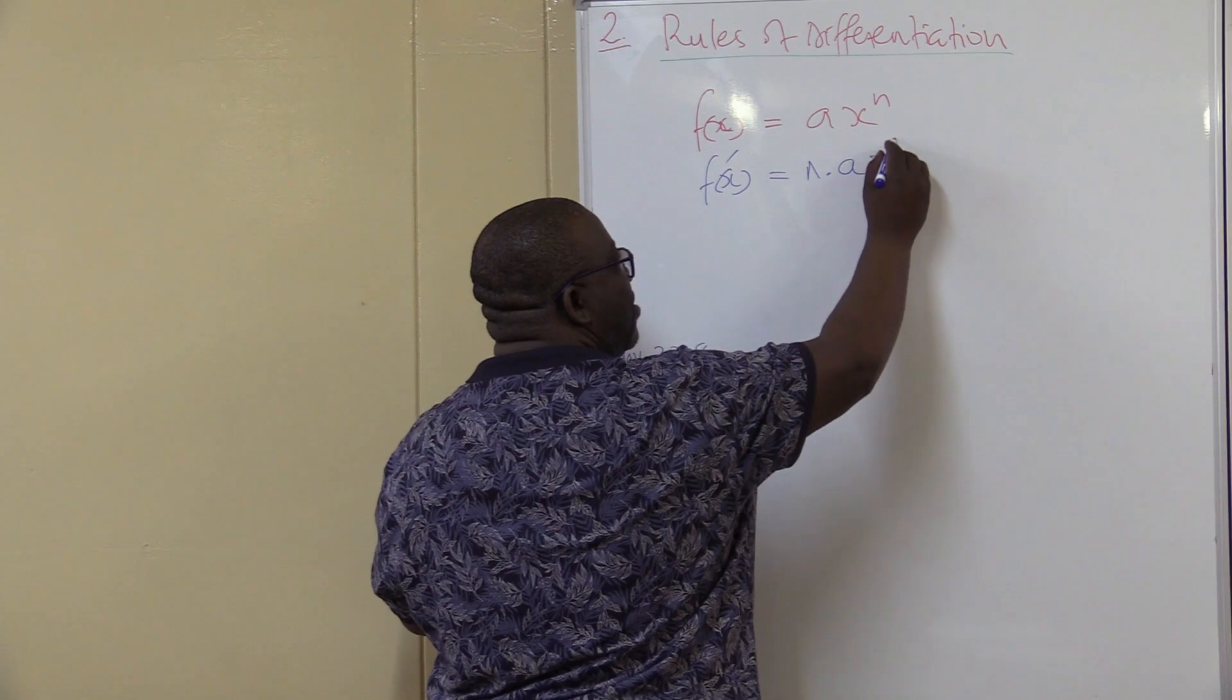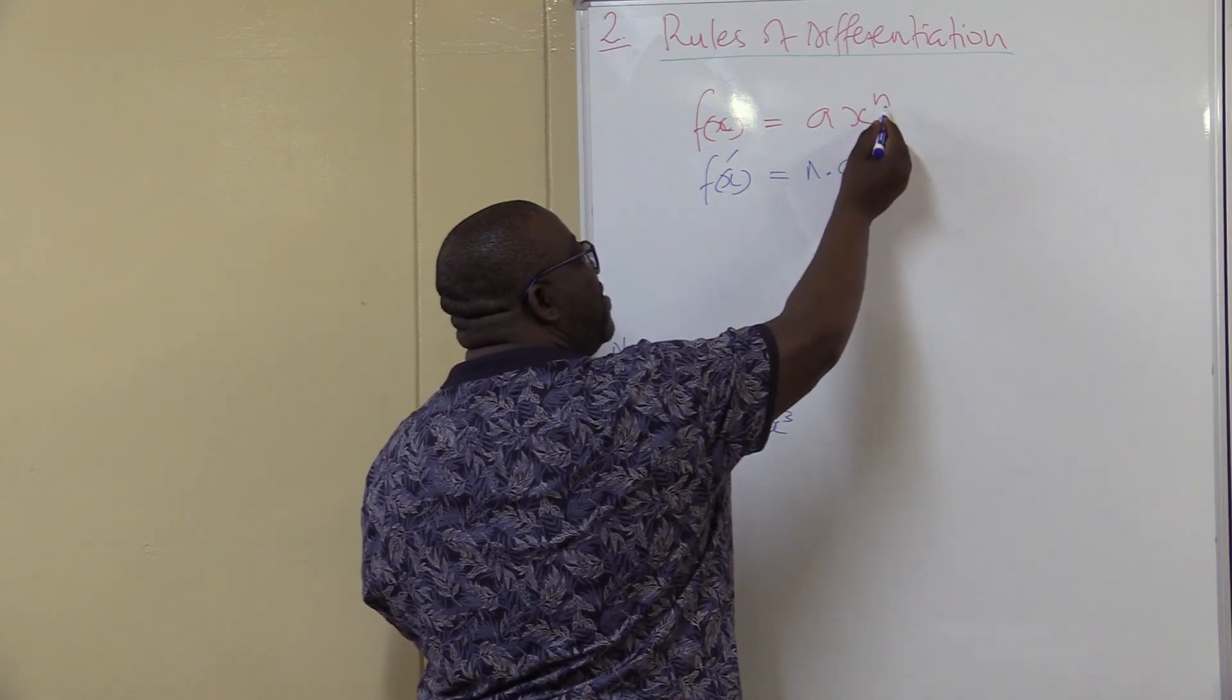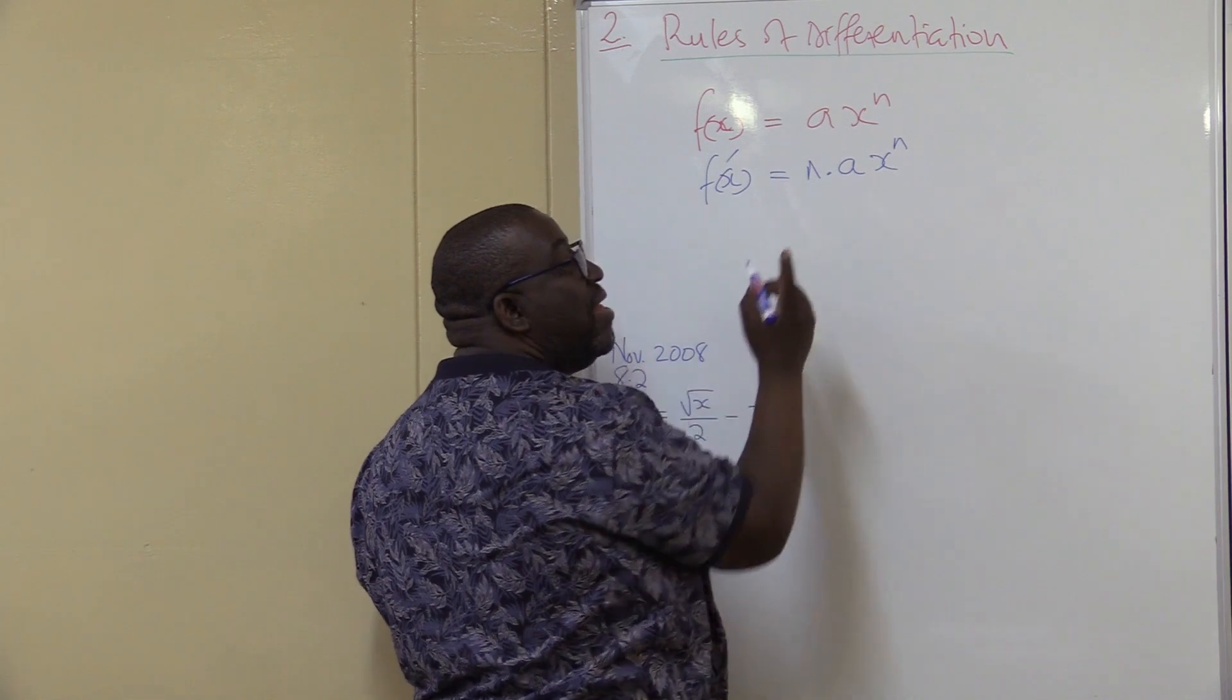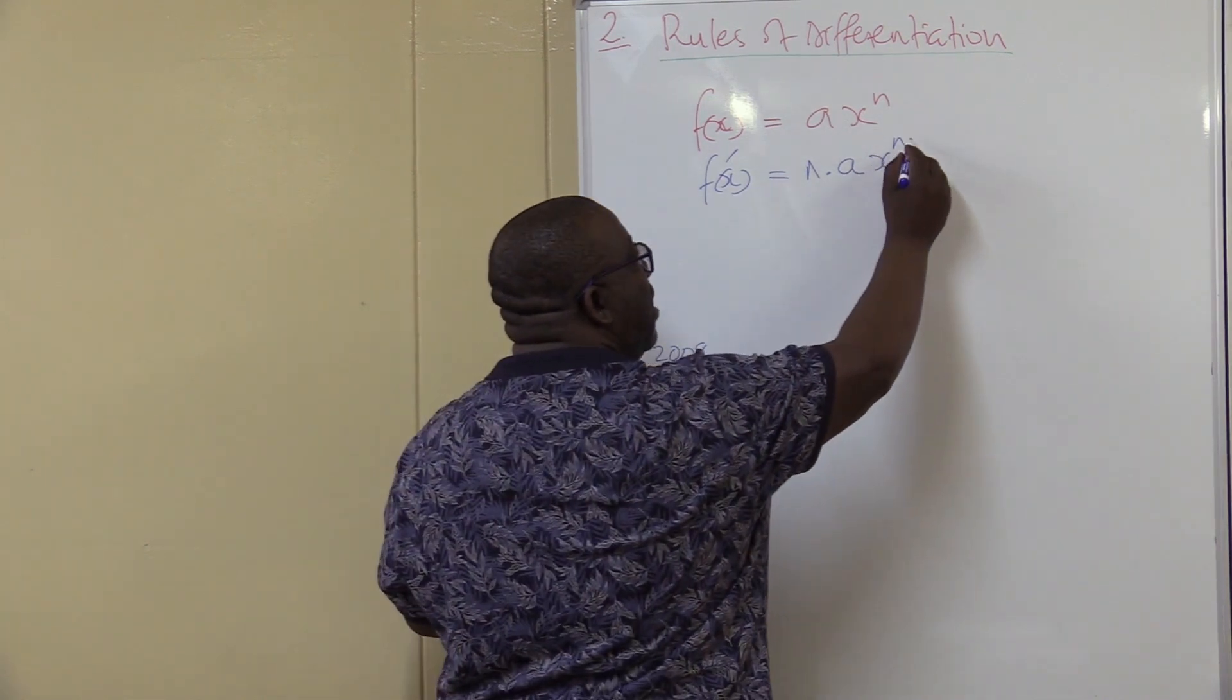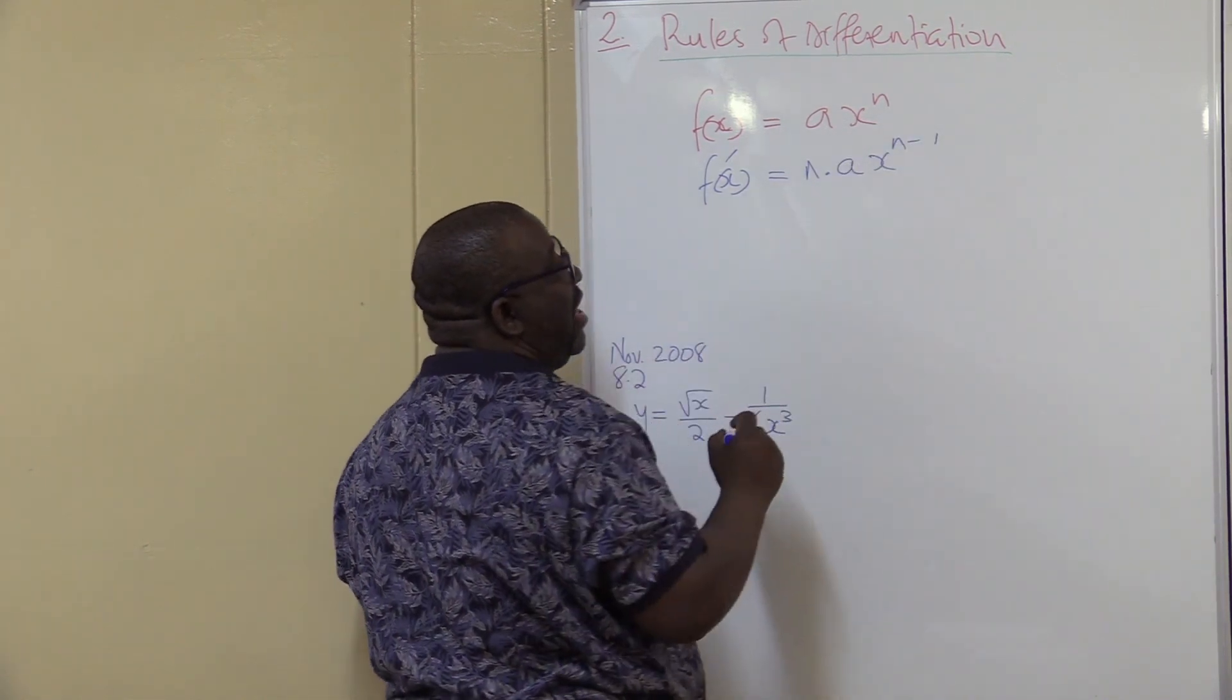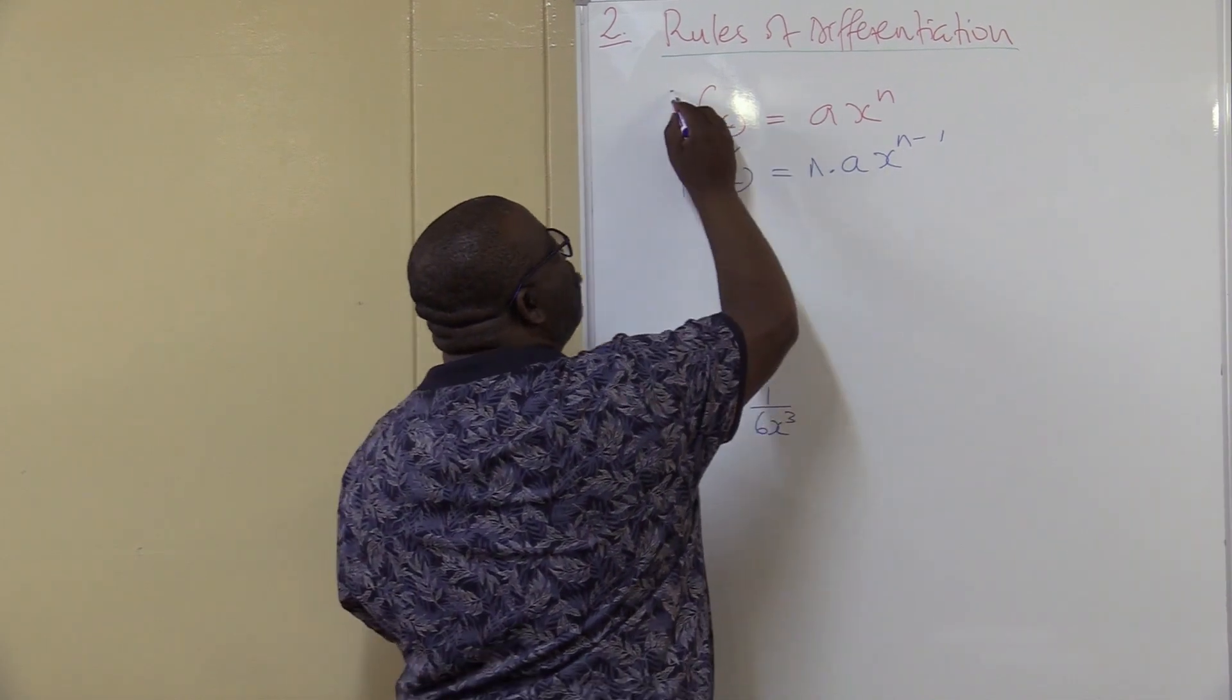So I'm going to have n times a. Remember you had x to the power n, so you've taken this n, you multiplied it here with the coefficient. Then you subtract 1 on the exponent. This is the rule that we'll be using.